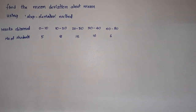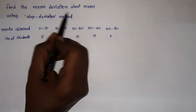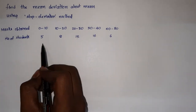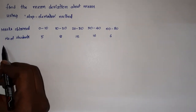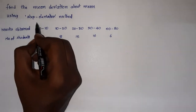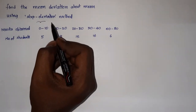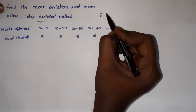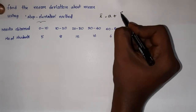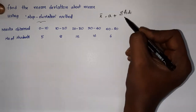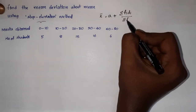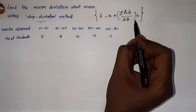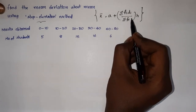Find the mean deviation about mean using step deviation method. For the class intervals starting 0 to 10, 10 to 20, and so on — mean deviation is equal to mean deviation using step deviation method. The mean formula is: x̄ = A + (Σfi·di / Σfi) × h, where A is the assumed mean, d is the deviation, and h is the class interval width.